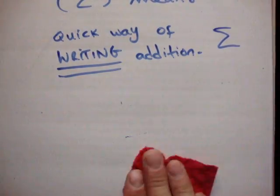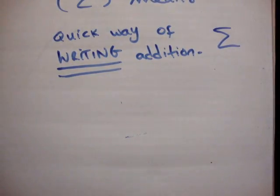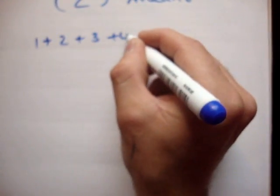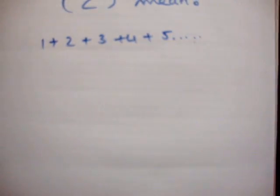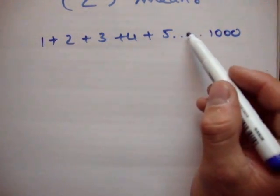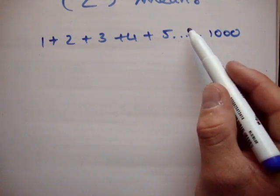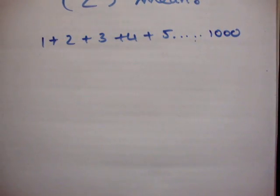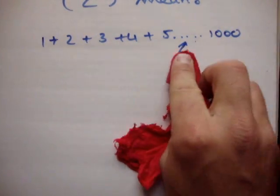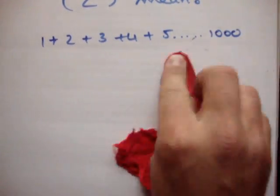Both sigma and the integral are related to adding lots and lots of things together, summing lots of different things. The integral has other uses as well. So capital sigma is a quick way of writing addition. If I had a sum like 1 + 2 + 3 + 4 + 5, up to 1000, that would involve a massive amount of paper. So I use dot notation — but there's actually a better way of doing it, and that is using sigma.